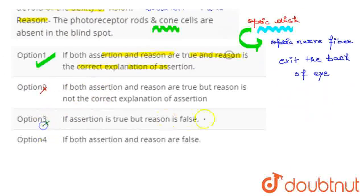Third option says assertion is true and reason is false. So, this option is the wrong answer.